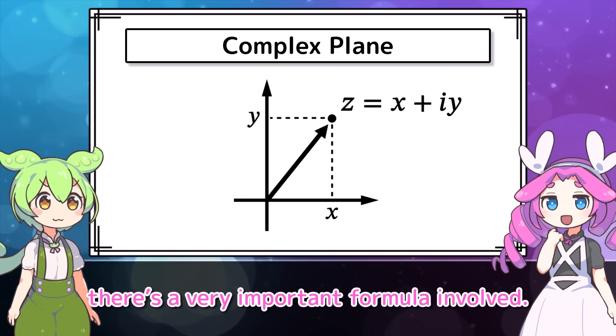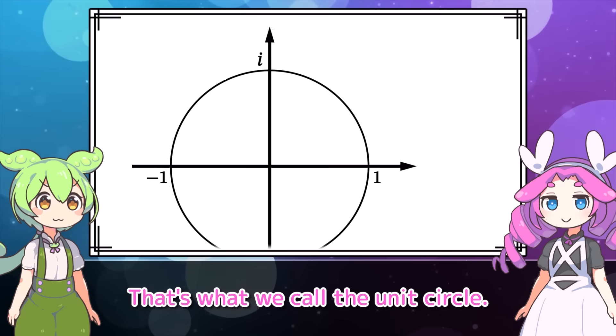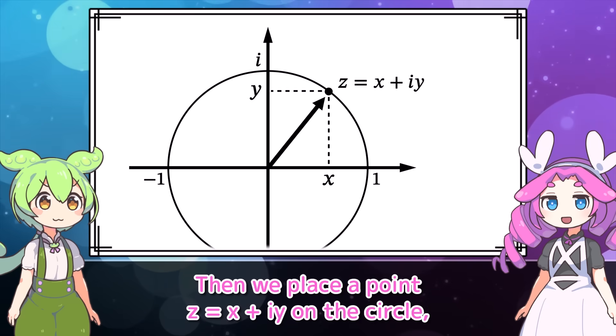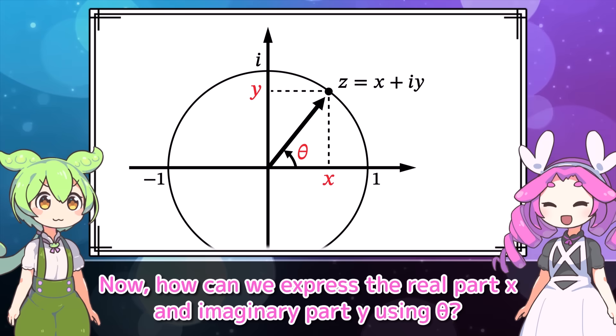Now then, let's use complex numbers to define multiplication in that spiral-shaped space. A complex number is a number expressed in the form x + iy, where x and y are real numbers. Here, i is the number whose square is negative 1, and it's called the imaginary unit. Okay, I'm good with this part so far.